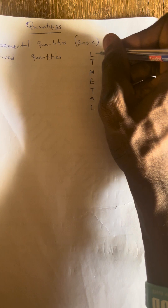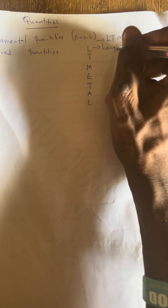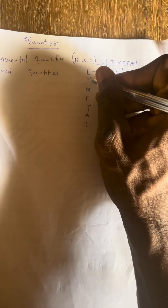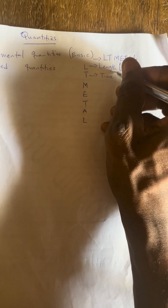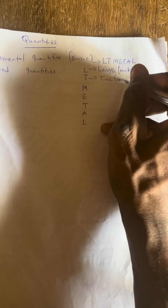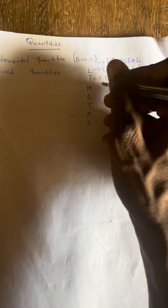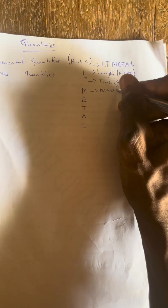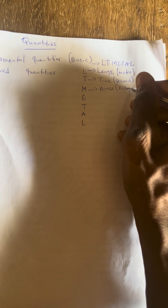The first one is L, and that is length. Don't forget, the unit of length is meter. We have T to be time, and time is measured in seconds. We have M to be mass, and mass is measured in kilogram.